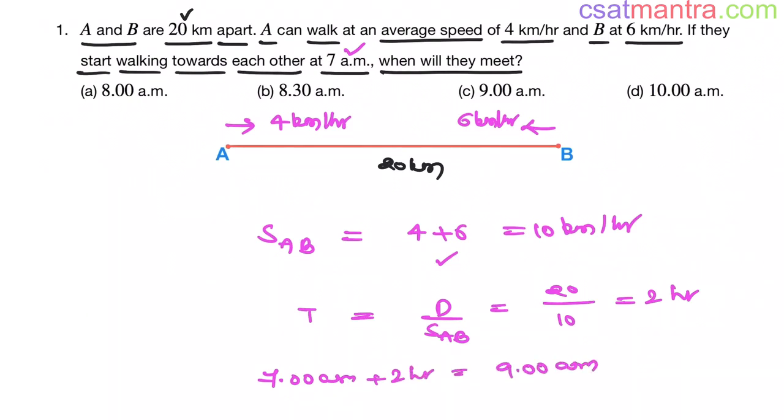So our answer is C. Very easy problem. You can expect these kind of questions in CSAT. I request you to kindly go through average speed and relative speed concept. You can expect one question from each concept.